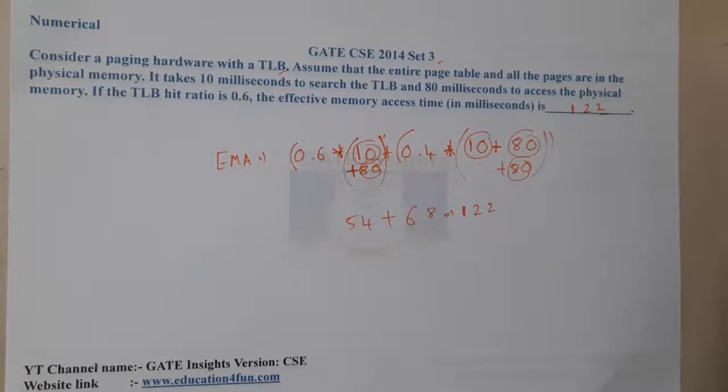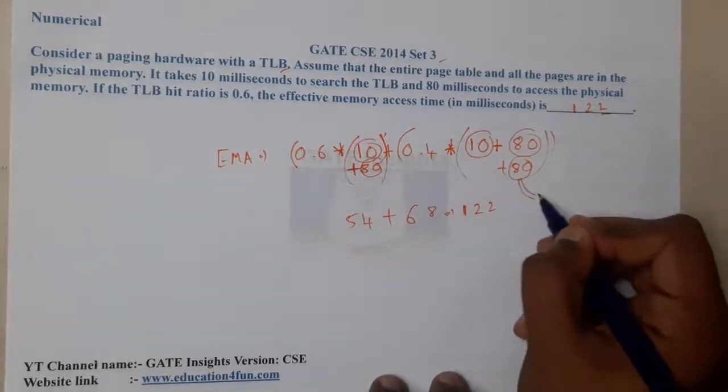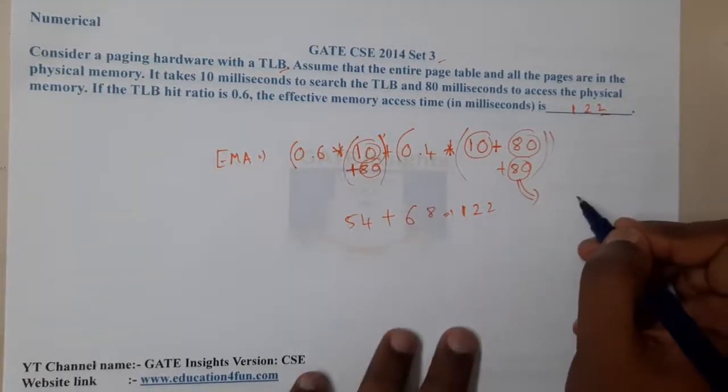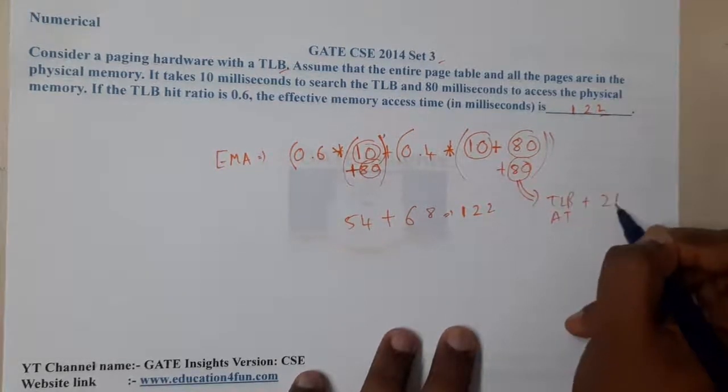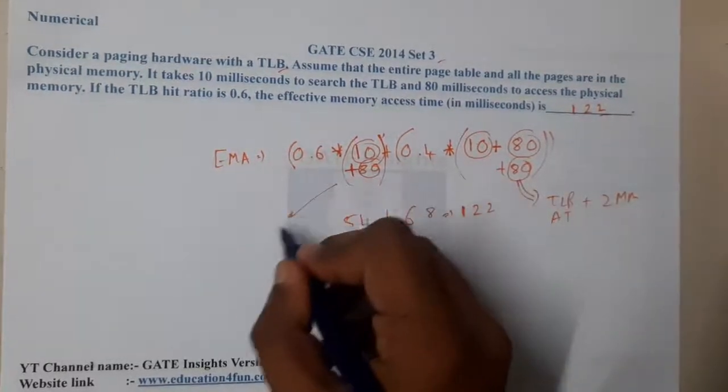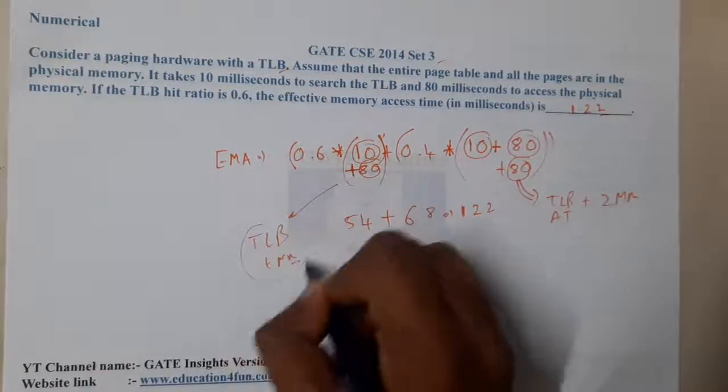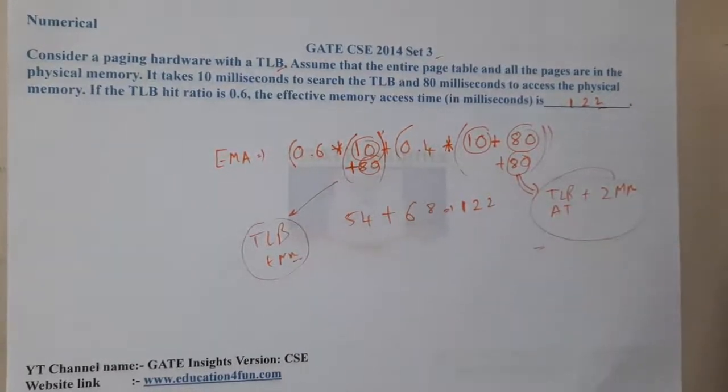So now I hope everyone got a clear idea. For easy understanding, most of the students will always remember in this way: it is TLB access time plus 2 into main memory, where here it is TLB access time plus memory. In this way, most of the students will always try to remember.